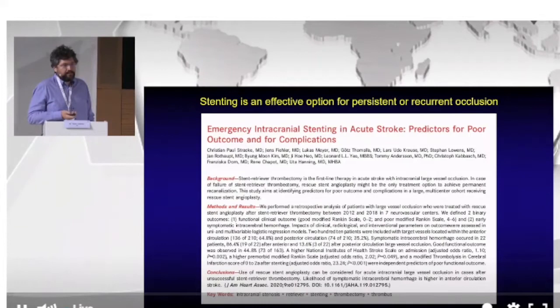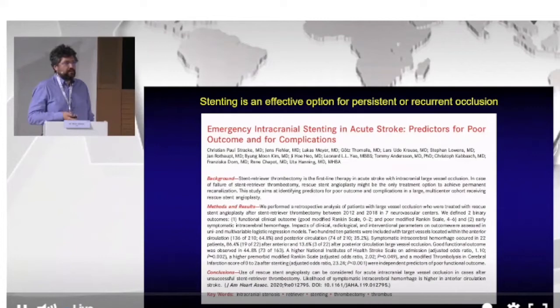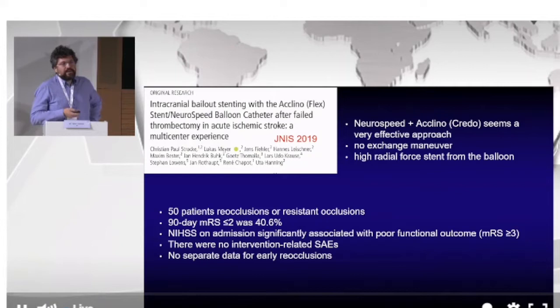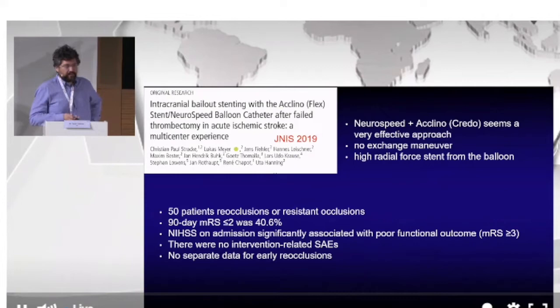Papers from our group and others consistently show that stenting for occlusion due to ICAD in the context of acute stroke is effective. One paper specifically analyzed the Credo stent combined with the NeuroSpeed balloon — I agree this is a very good combination because we can avoid the exchange maneuver, which is the most dangerous part of intracranial stenting with previous devices. The radial force of the stent is also very useful for calcified or very hard occlusions.